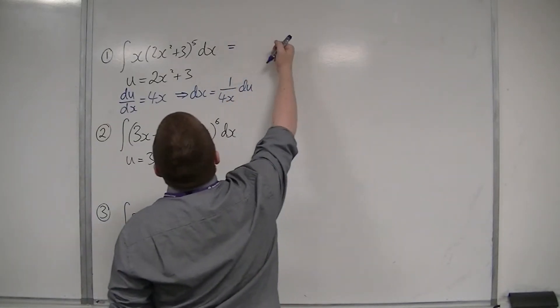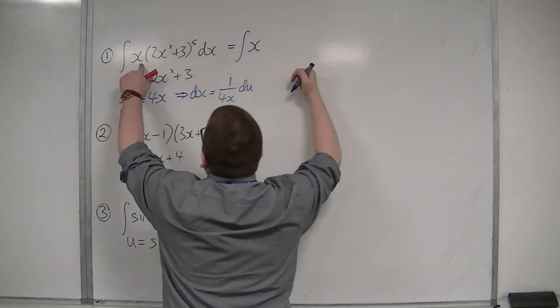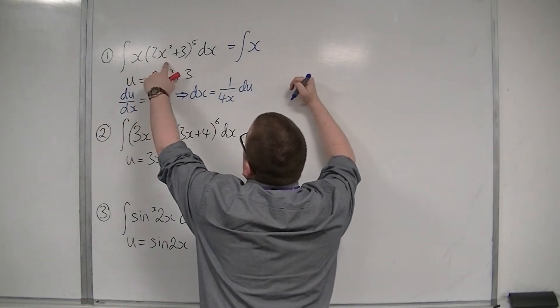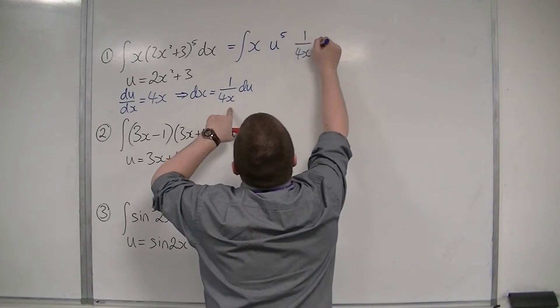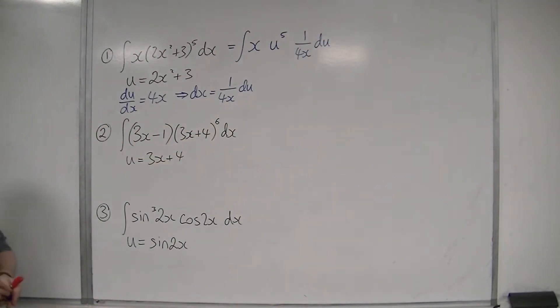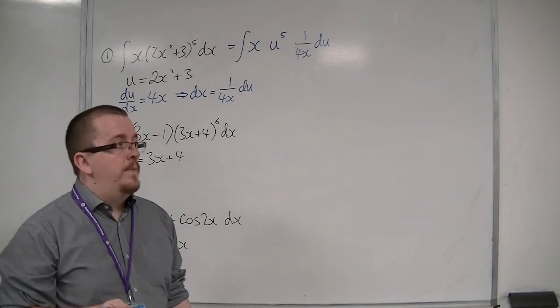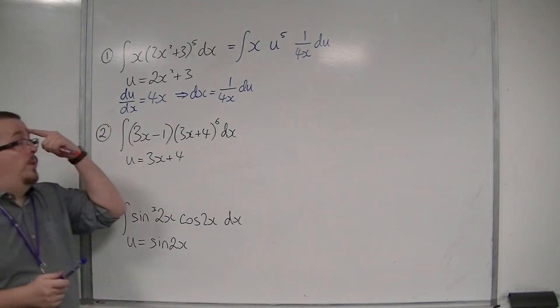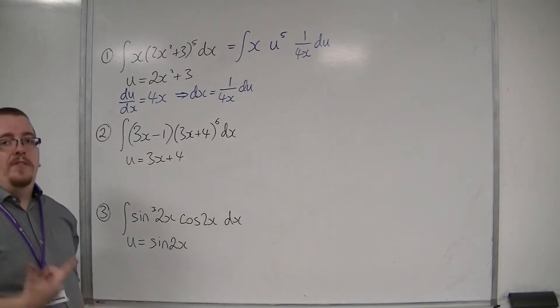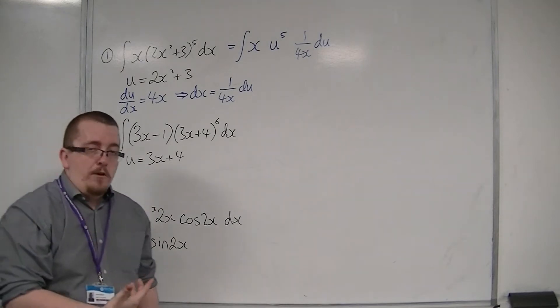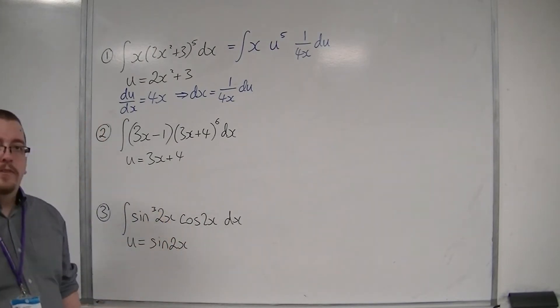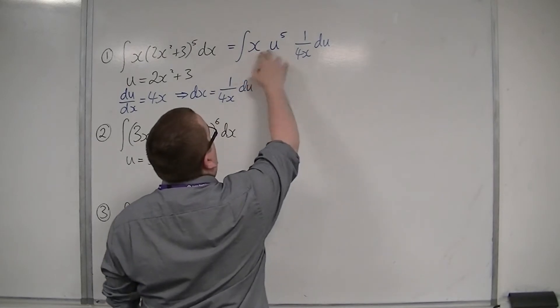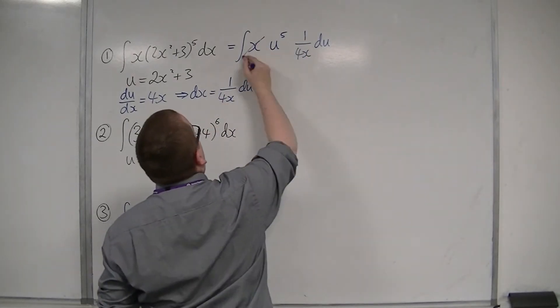So I've got the integral of x, because I don't have a substitution for that yet, but I do have a substitution for the 2x²+3. So I've got u⁵, and then dx was 1/(4x) du. Now, what we have here is something that some maths teachers aren't going to particularly like, mainly because I've got x's and u's in the same integral. I personally don't mind it because I think it shows exactly where the cancellation occurs. Because here you can see that we have an x and a 1/x, and they will cancel each other out.